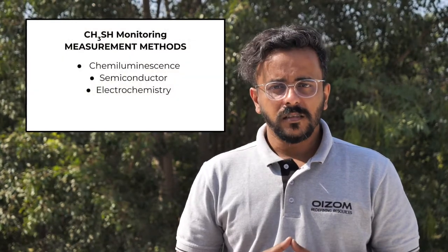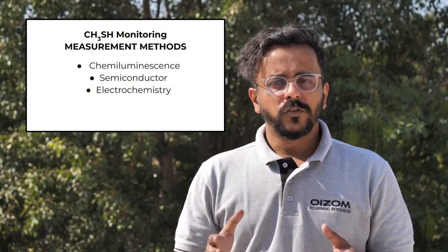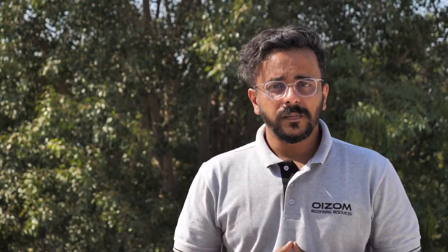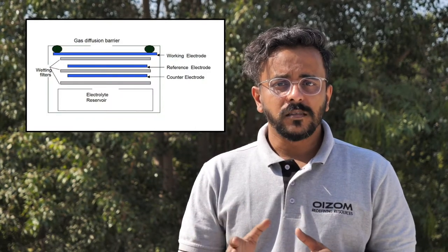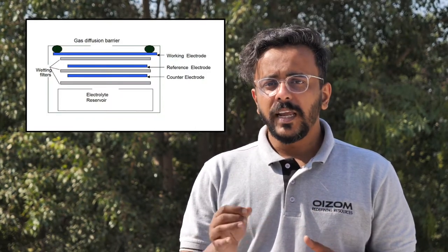Hence, other means such as the use of methylmercaptan monitors is a viable solution to provide adequate warning of hazardous exposure. The different working principles for methylmercaptan monitoring in the ambient environment are chemiluminescence, semiconductor, and electrochemistry. At OISOM, we measure methylmercaptan on the principle of electrochemical sensing, which operates based on diffusion of methylmercaptan molecules into the sensor, resulting in the production of an electrical signal proportional to its concentration.